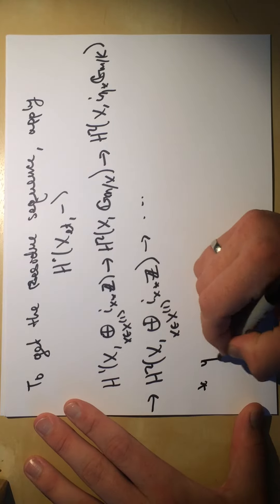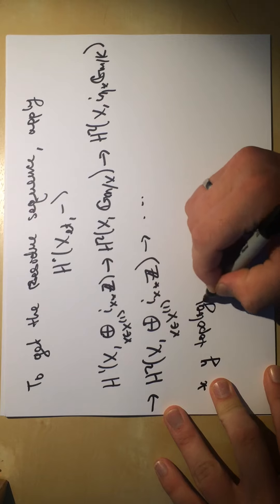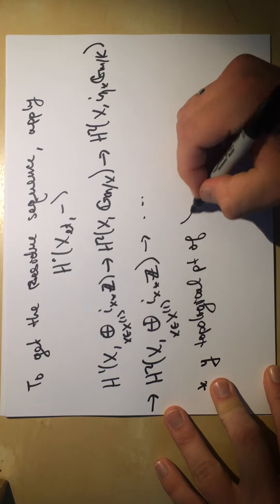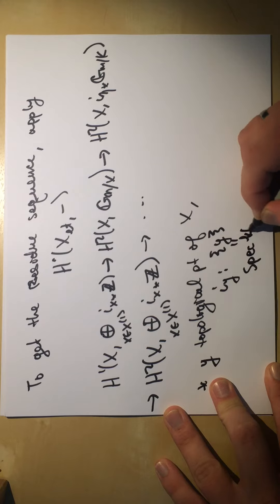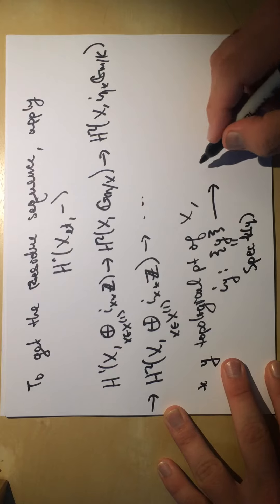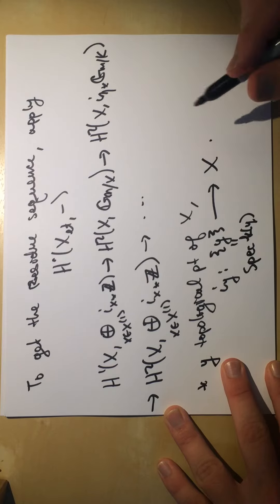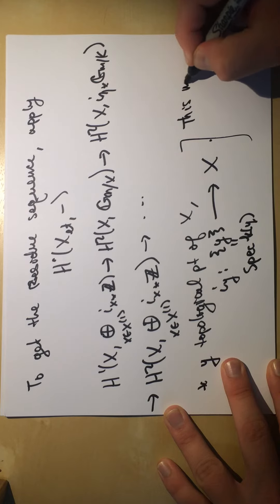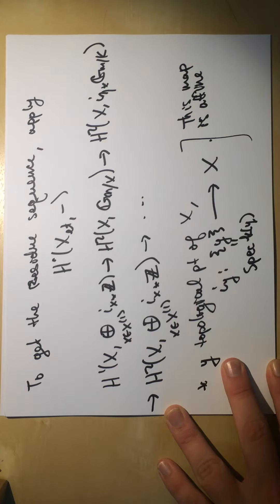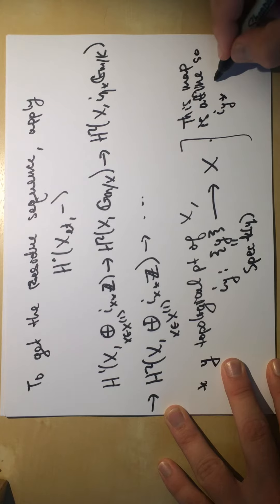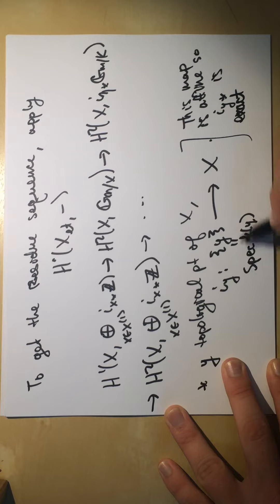A key remark: for a topological point y in X, the map iy: Spec(κ(y)) → X is affine (trivially, since it's a single point). Therefore the pushforward (iy)* is exact, so we can compute cohomology either on Spec(κ(y)) or on X using this pushforward.